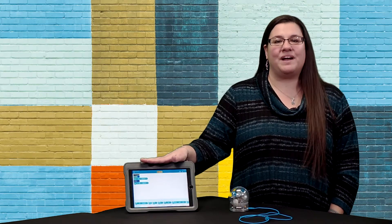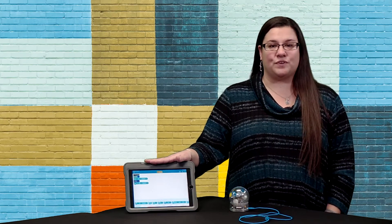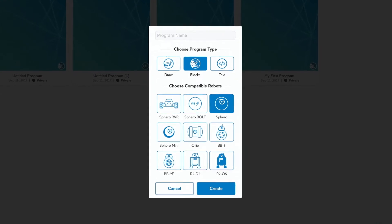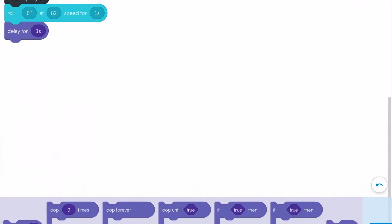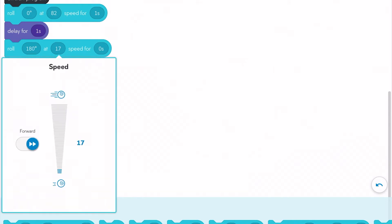In the Sphero EDU app, you have three types of programming to choose from: Draw, block, or text using JavaScript. This feature allows students with all levels of programming experience to enjoy learning with the Sphero.